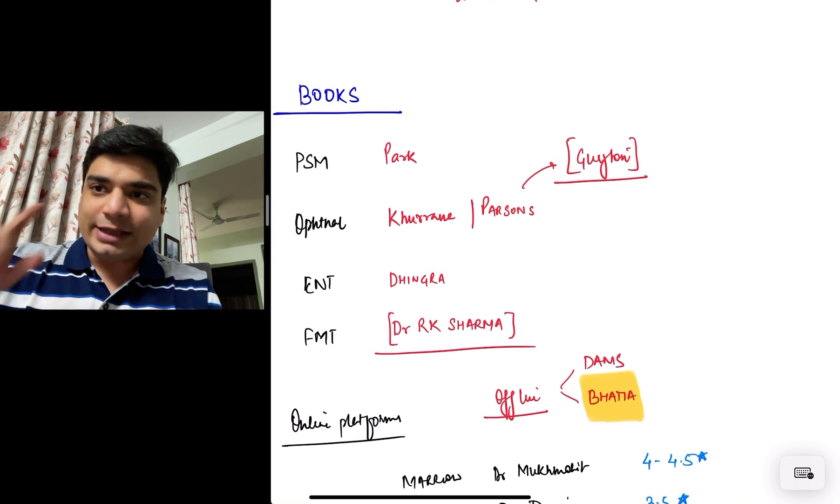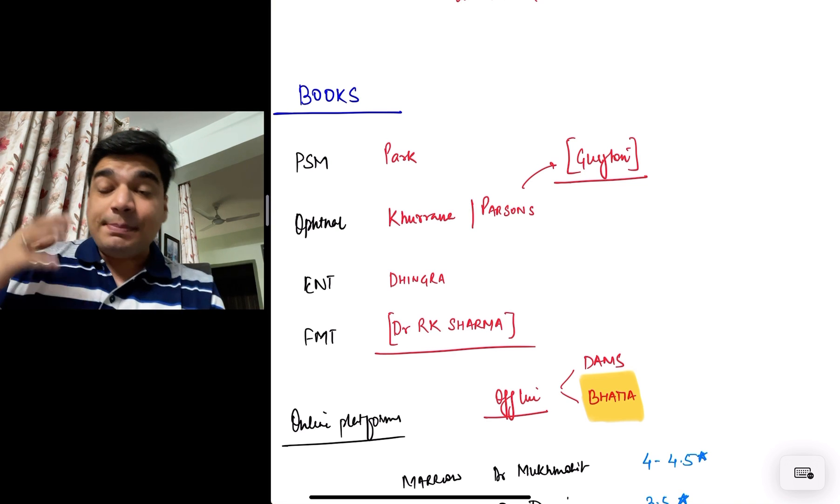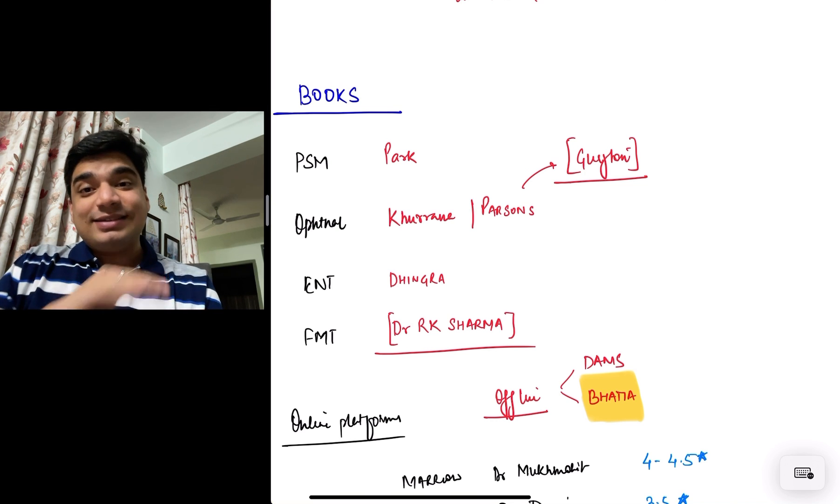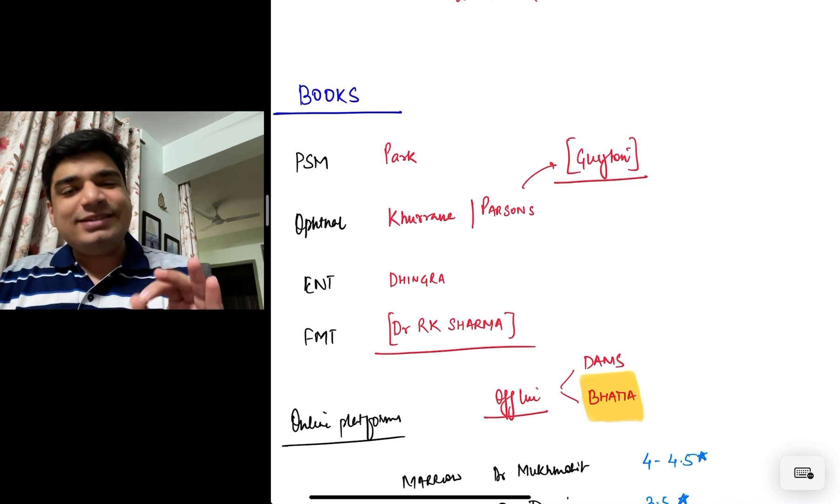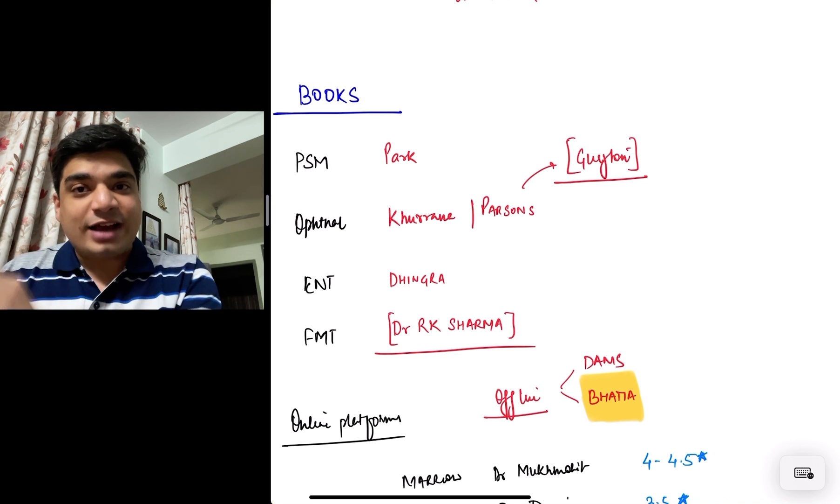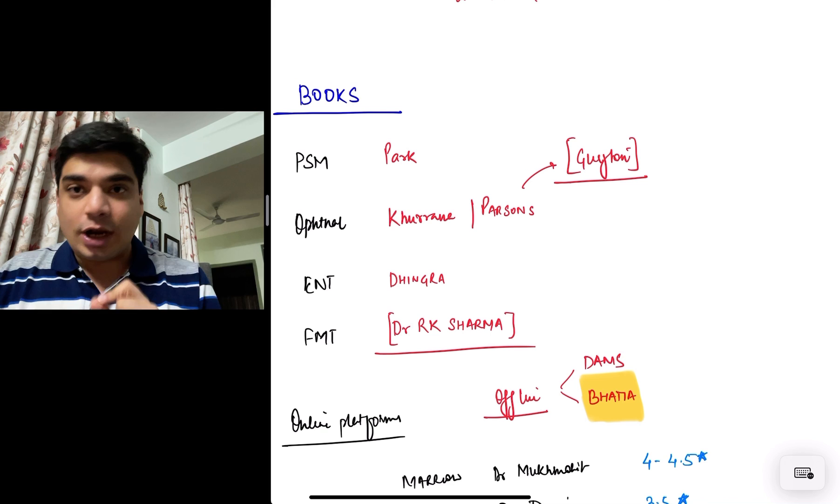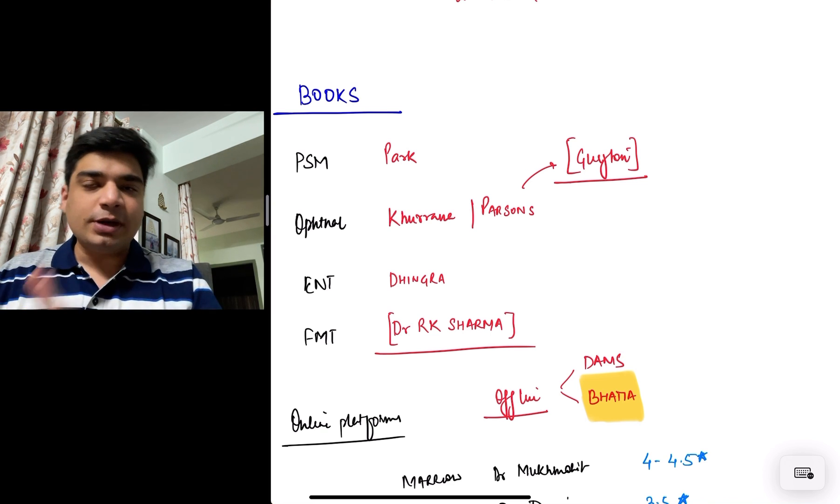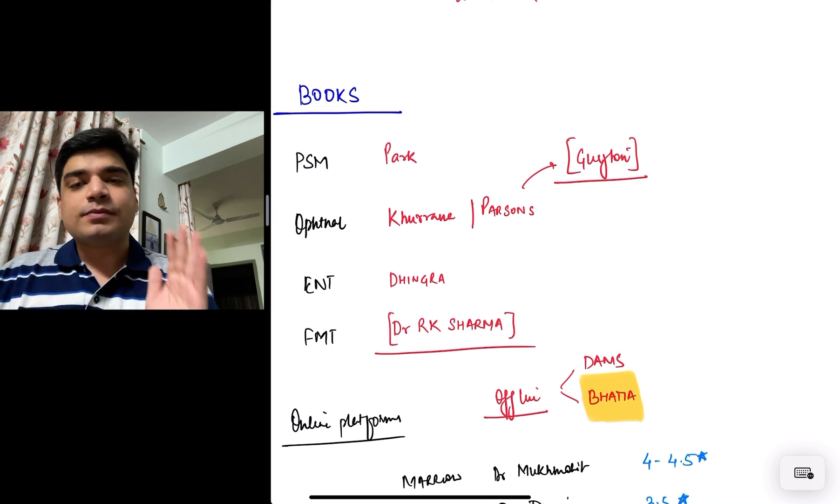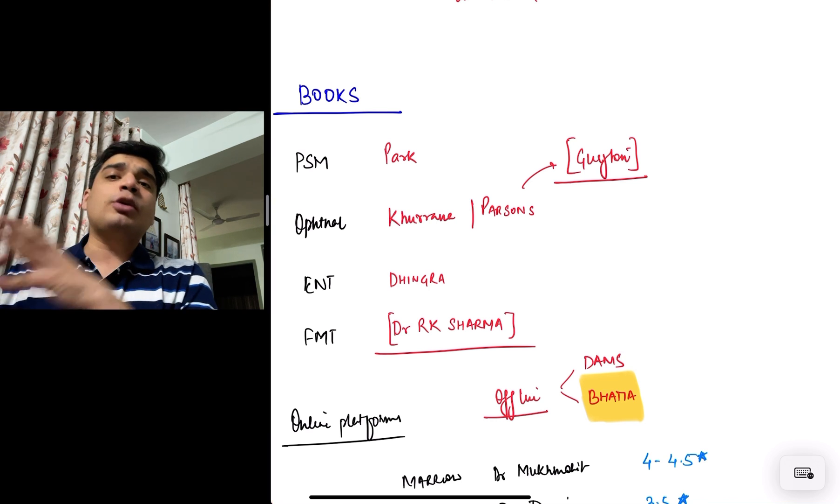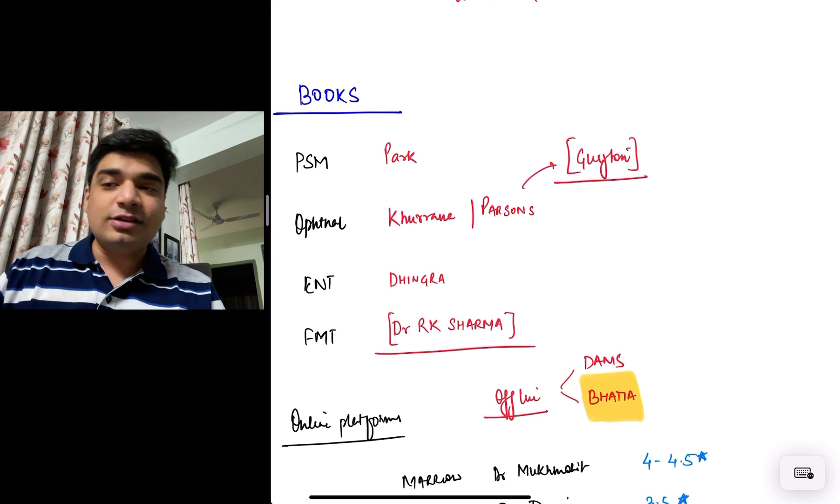PSM Park, no doubt about that. Ophthal, either Khurana or Parsons. Now I personally preferred Parsons, reading Parsons, but there's a problem with Parsons. The problem with Parsons is the same as the problem with Guyton. Easy to read, like a storybook. You don't remember jack shit when exam comes and you're not able to form answers. That is the problem with Parsons, which is the reason you might end up taking up Khurana, which is a perfectly valid option in my opinion. Khurana is also a decently written book.